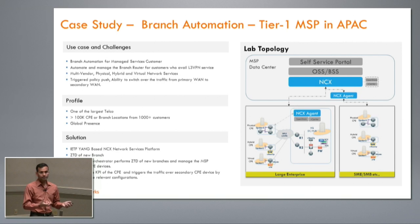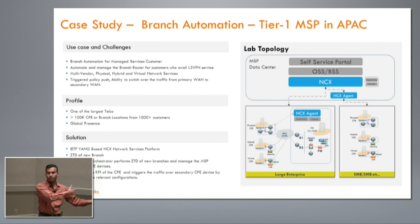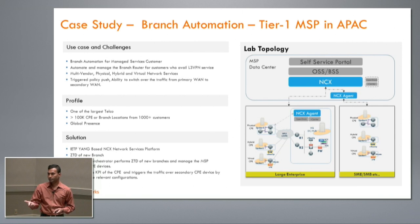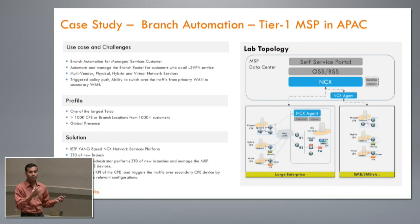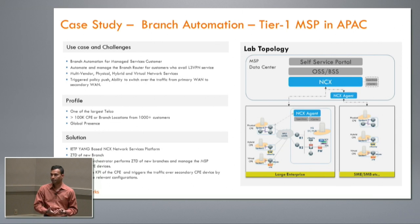In this deployment, NCX is the main controller or server that sits in the MSP data center. For a small or medium business, you could have an agent that also sits within the MSP data center and communicates over the WAN to all the main enterprises. For a larger enterprise, you can set up the NCX agent closer to the devices, and the agent does all the hard work of configuring the devices while the controller holds all the policy information.